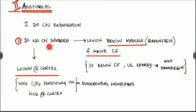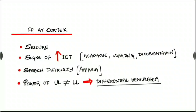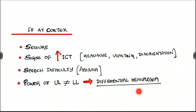If there is no cranial nerve involved, one possibility is a lesion in the cortex, with clinical features depending on the site of the lesion in the cortex. For example, if there is a lesion in the representation of the hands in the cortex, then there is paralysis in the hands only and all other areas are normal. Other features include seizures, signs of raised intracranial tension like headache, vomiting, and disorientation, and speech difficulty known as aphasia. The power of the upper limb won't be equal to the lower limb — there is differential hemiplegia.